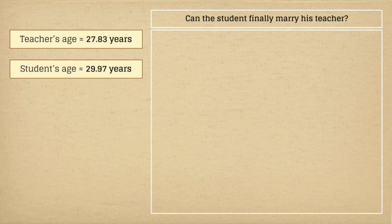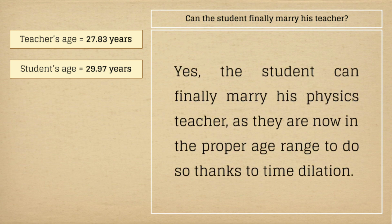Assuming that we will not consider any other factors, then the answer would be yes. The student can finally marry his physics teacher, as they are now in the proper age range to do so, thanks to time dilation.